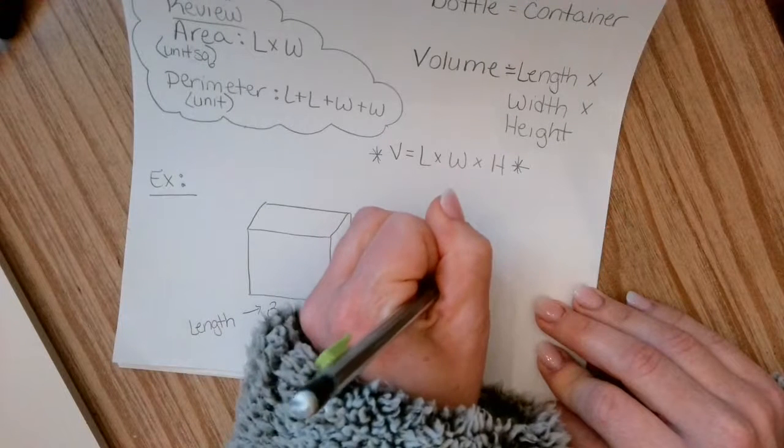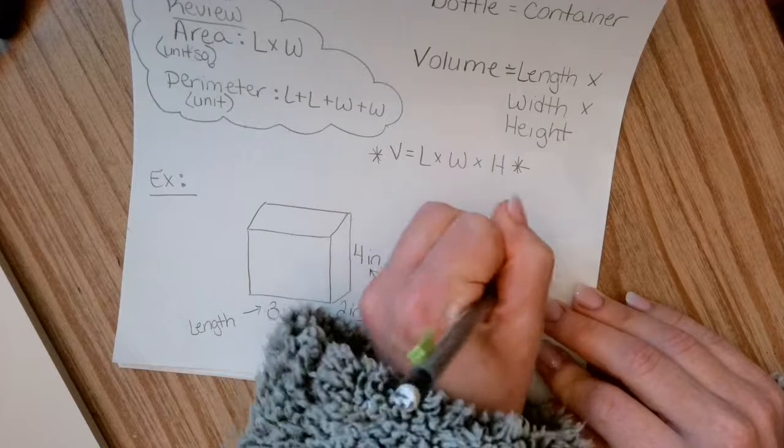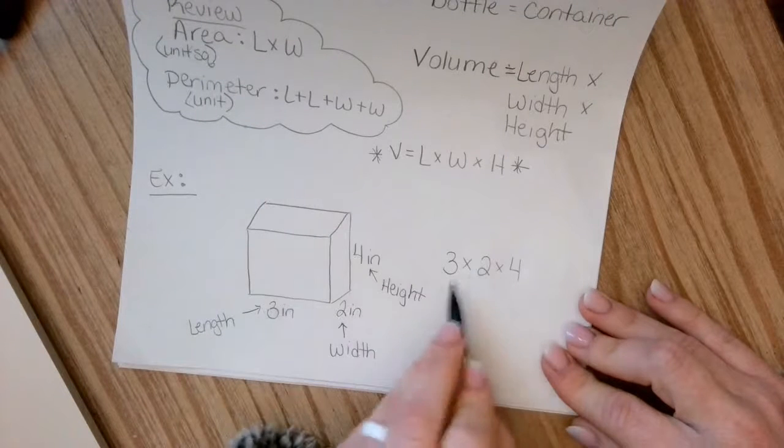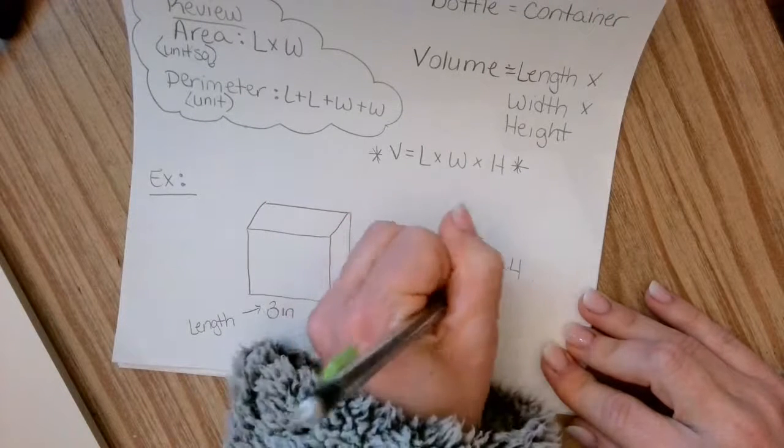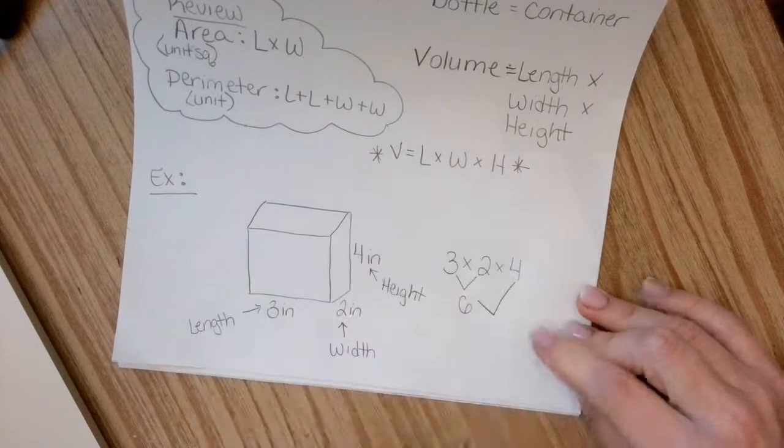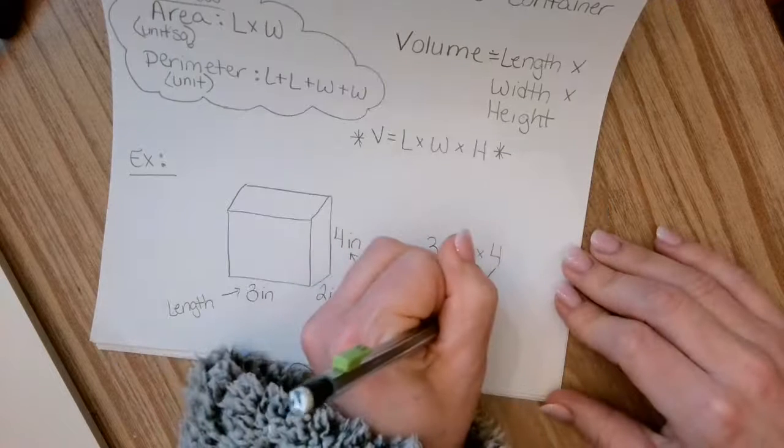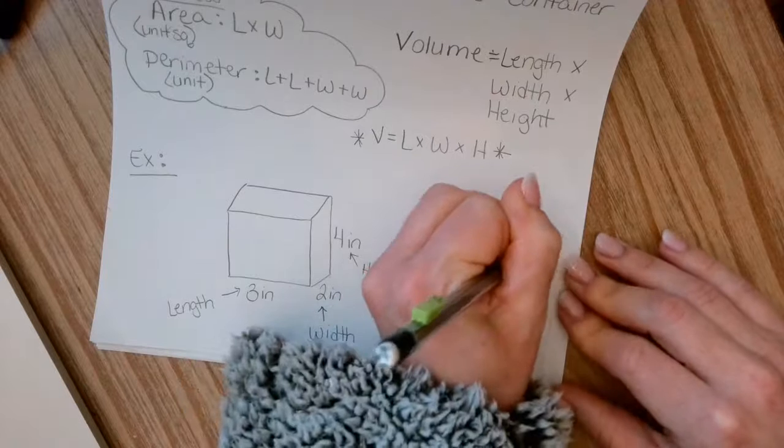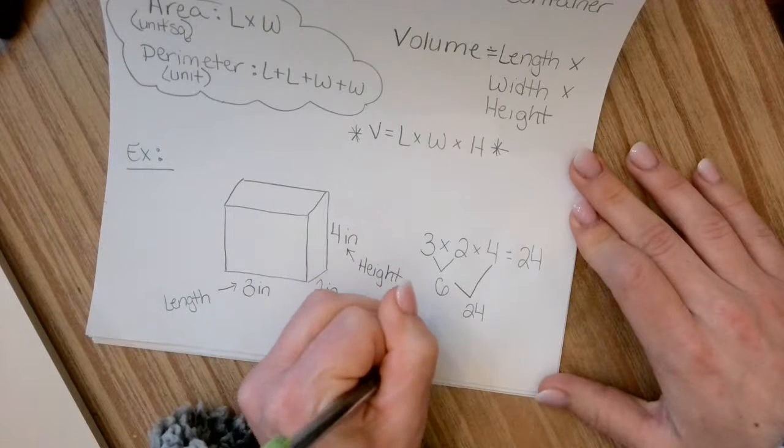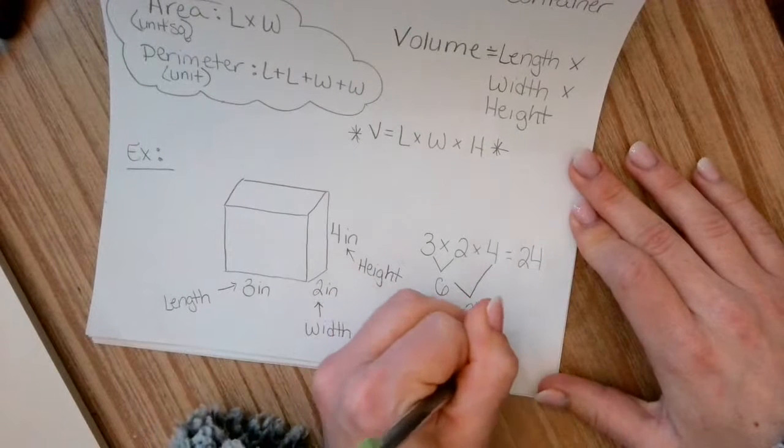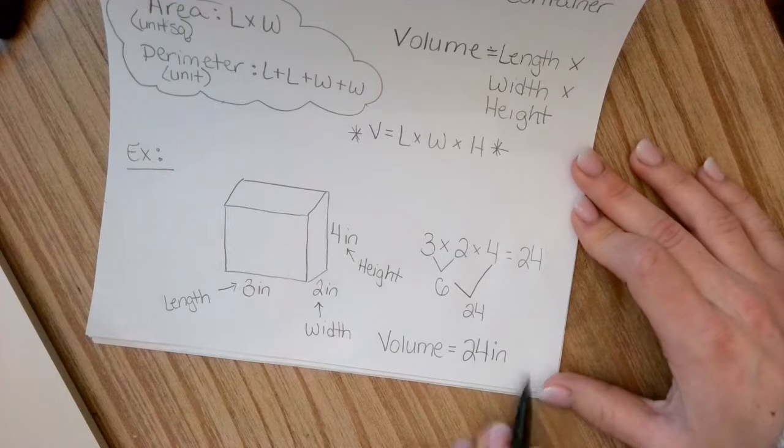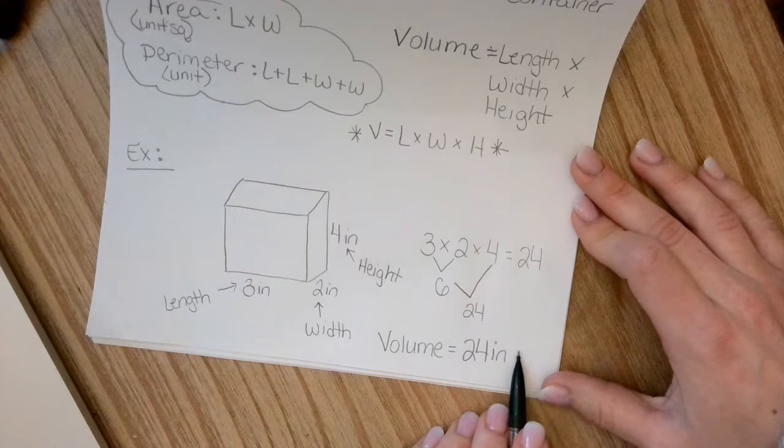So to get volume, I'm just going to take three times two times four. And the way I like to do these is I like to multiply two of them, the first two together. So three times two is six. And then I like to multiply the six and then the last number together, which is four. So my answer is 24. So then my volume is going to be 24 inches. But volume also has a little important exponent that we have to put here. And can anyone guess?